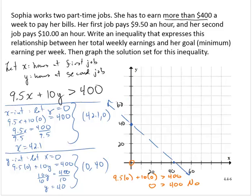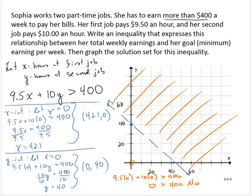So then we would shade the region that does not contain 0, 0. Now, realistically though, you can't work a negative number of hours. So I would adjust this just a little bit, and so I would have my marks only in the first quadrant, the shading only in the first quadrant.